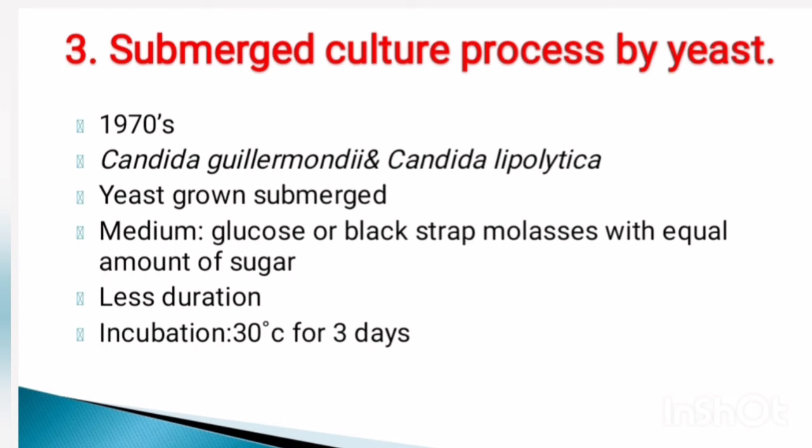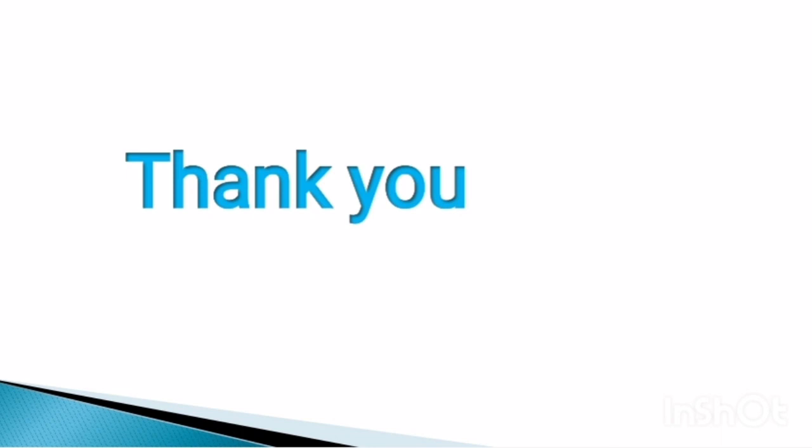The third process is the submerged culture process by yeast. In 1970, the production of citric acid by yeast species — for example Candida guilliermondii — was demonstrated. The yeast is grown submerged in a medium containing glucose or blackstrap molasses with an equal amount of sugar. The incubation period is three days at 30 degrees Celsius, which is shorter than the Aspergillus niger submerged process. This process can also be carried out using Candida lipolytica and consists of a single vessel.